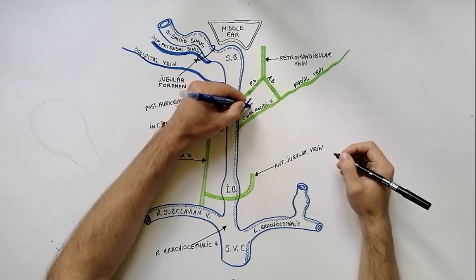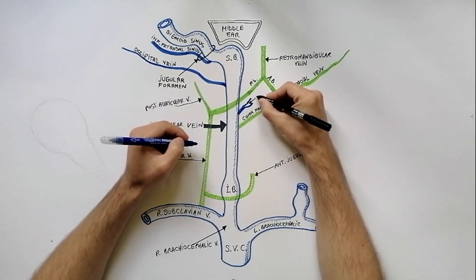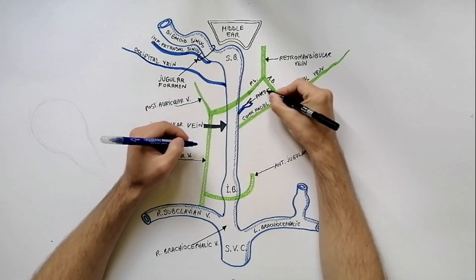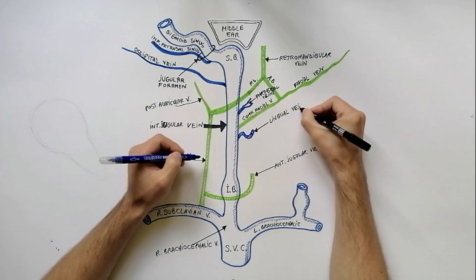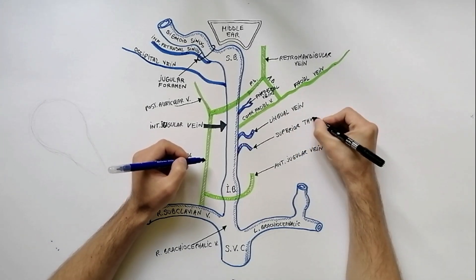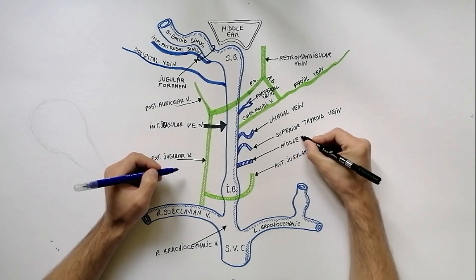Other tributaries to the internal jugular vein are the pharyngeal veins, the lingual vein, the superior thyroid vein, and the middle thyroid vein.